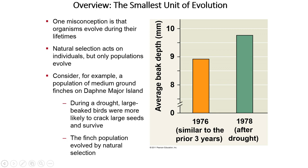As you just saw in that video, it's clear that individuals do not evolve — populations evolve. Populations change over time. Evolution occurs at the population level. Natural selection, one of the major driving forces of evolution, acts on individuals within a population. Over time those populations change. More specifically, you'll see a change in the phenotypes of individuals, which is ultimately reflected in the alleles that individuals carry. That's what gives rise to these changes over time.